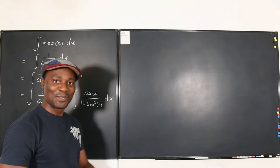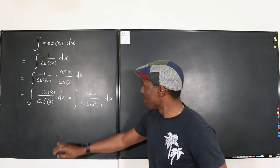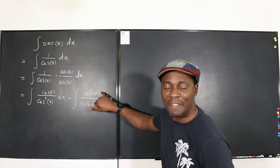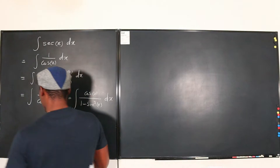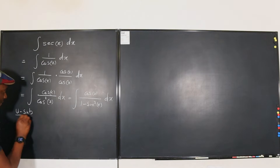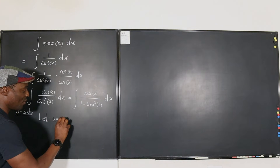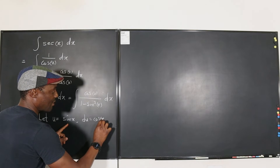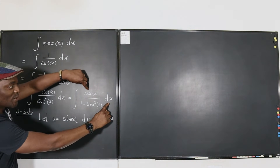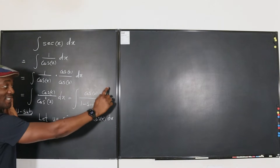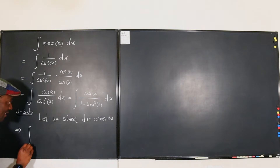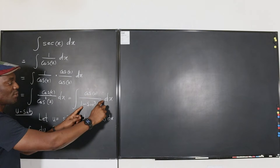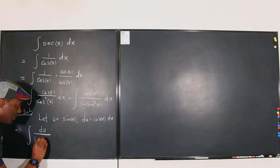Now u-substitution becomes relevant. All you have to do is ask: if I take the derivative of something in the denominator, will it give me the top? Yes — if I take the derivative of sine x, it gives me the numerator, which is cosine x. So let u equal sine x, such that du equals cosine x dx. We have generated cosine x dx, and we're going to replace it with du. So this entire expression becomes the integral of du over 1 minus u squared.